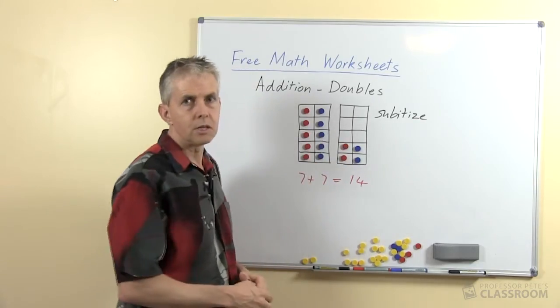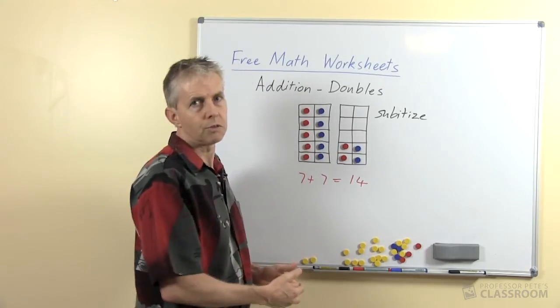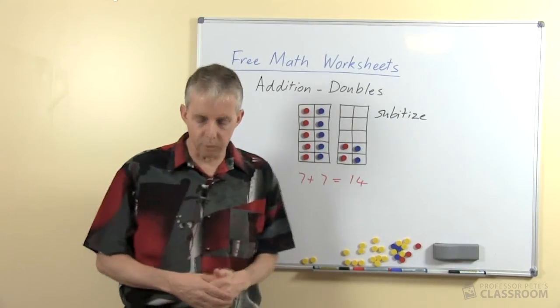And so the double 10 frame lets the students quickly see, recognize, subitize the number 14 and so we can use it in that way to associate the double 7 with 14.